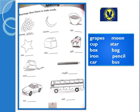Ye page bhi aapko bahut acche tarike se samajh mein aa gaya hoga. Isko bhi aapne apni book ki upar karna hai. Is page pe baccho kuch aapko jumbled words di hui hain aur saath mein unki picture bhi di hui hai. Toh aapne unko rearrange karke isi tarah likhna hai. Jaise first agar picture dekhen toh grapes ki hai — toh iski spellings mein mistake hai, aapne grapes ke sahi spellings likhne hain.